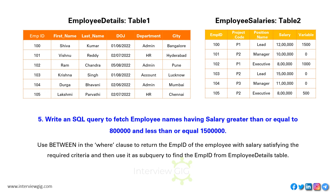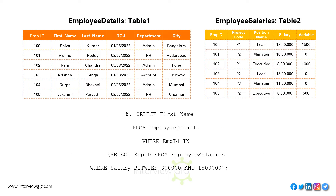Write an SQL query to fetch employee names having salary greater than or equal to 8 lakhs and less than or equal to 15 lakhs. Use BETWEEN in the WHERE clause to return the employee IDs satisfying the required criteria, then use it as a subquery to find the employee names from the employee details table. SELECT first_name FROM employee_details WHERE employee_ID IN (SELECT employee_ID FROM employee_salaries WHERE salary BETWEEN 800000 AND 1500000).